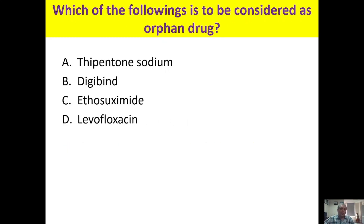Which of the following is to be considered an orphan drug? Thiopentone sodium is used for induction of general anesthesia; ethosuximide is used for absence seizure; levofloxacin is a second-generation fluoroquinolone most commonly used as an antimicrobial, especially for respiratory infections.